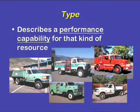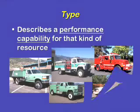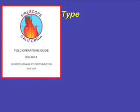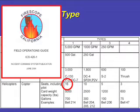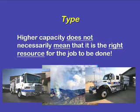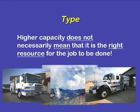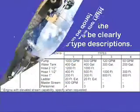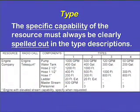The type of resource describes a performance capability for the kind of resource. For example, in the California Fire Service Field Operating Guide, a Type 1 helicopter will carry up to 16 persons, or a Type 3 helicopter will carry up to 5. Resources are usually typed by number, with one being the highest and two being the next highest. However, a higher capacity does not necessarily mean it is the right resource for the job — for example, a Type 1 engine has the highest pumping capacity but cannot access the rough terrain of a wildland fire. Specific capabilities of resources must always be clearly spelled out in the type description.